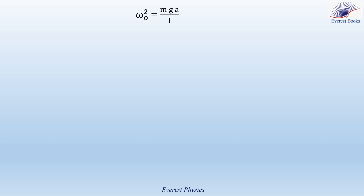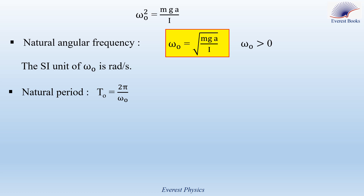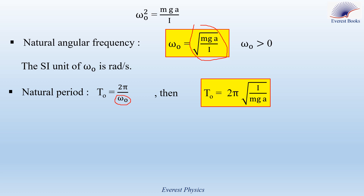Let's move to the expression of the angular frequency. As we have seen, omega-0-squared equals MgA over I. So the natural angular frequency is omega-0 equals the square root of MgA over I. This expression shows that omega-0 is a positive quantity. The SI unit of omega-0 is radians per second. The natural period is T0 equals 2 pi over omega-0. Replacing omega-0 by the square root of MgA over I gives T0 equals 2 pi times the square root of I over MgA. The SI unit of the natural period is seconds.